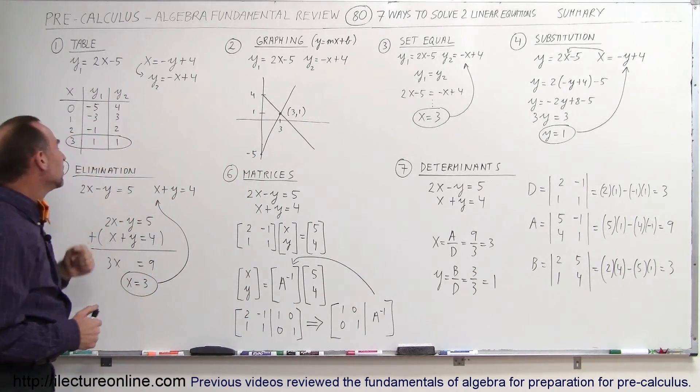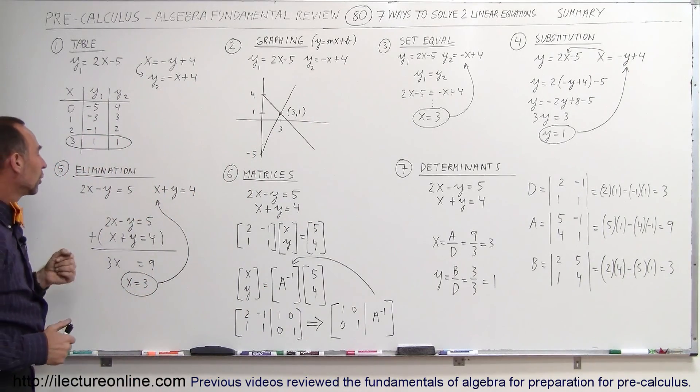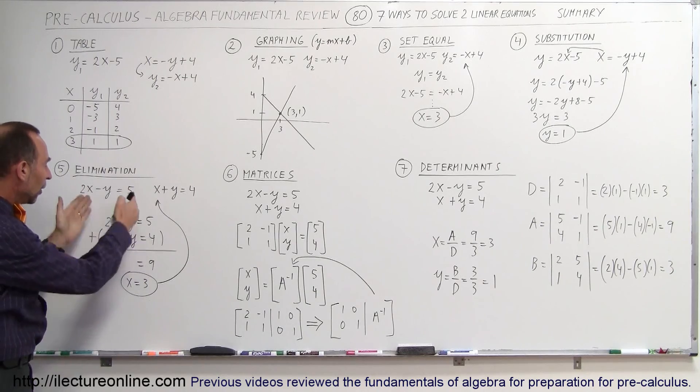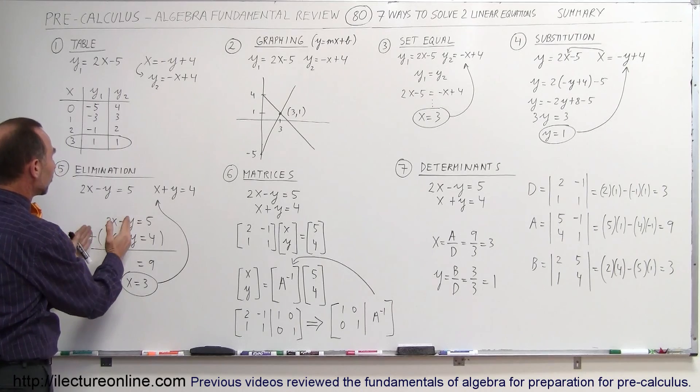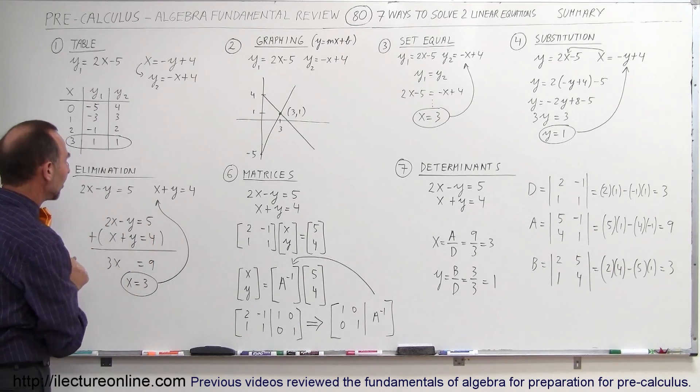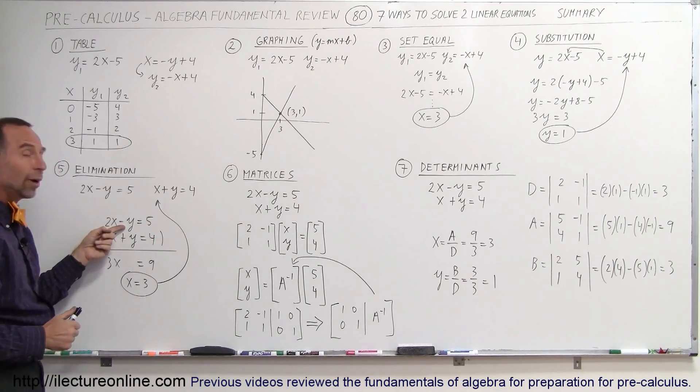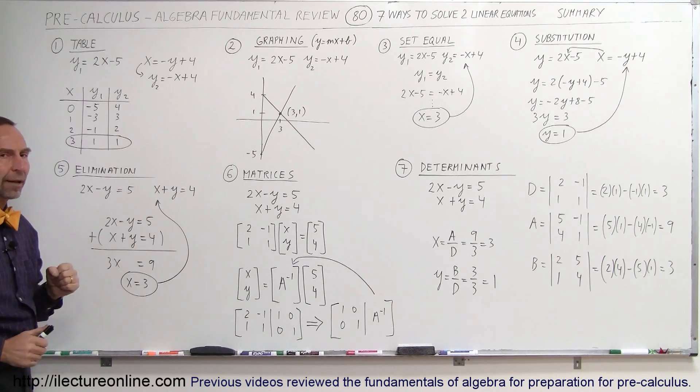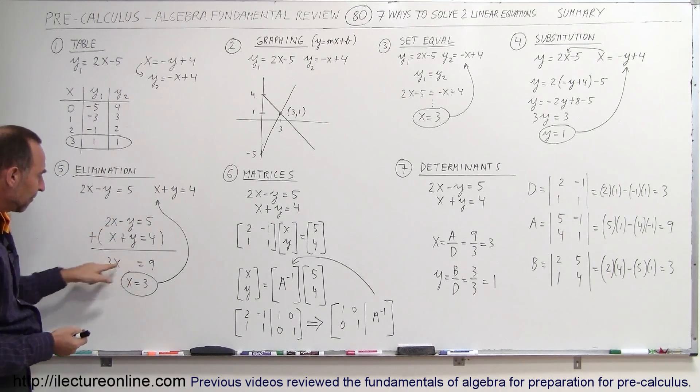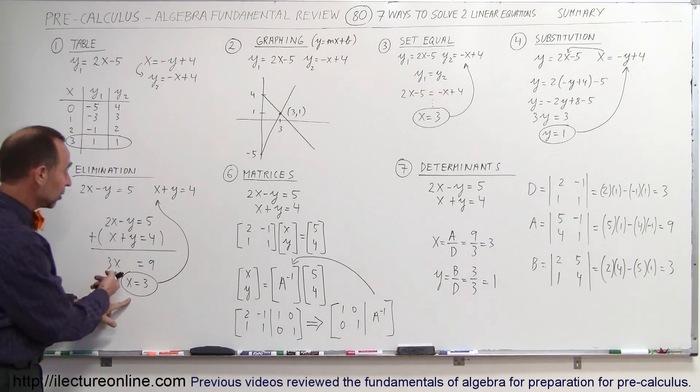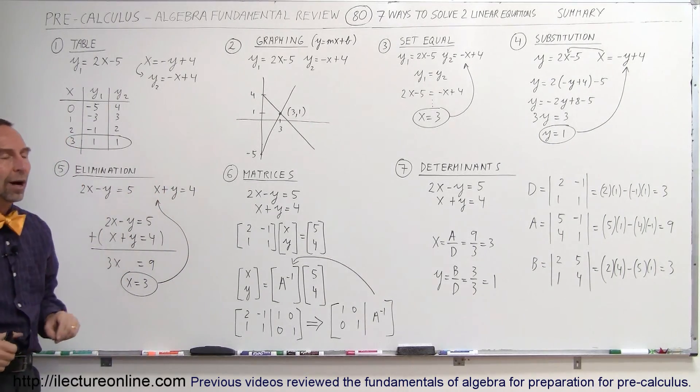The fifth method is called the elimination method. Here's your two equations. You put them one on top of each other, but notice the format. You write them as the x and the y values on one side and the constants on the other side. Notice that you have a minus y in the top equation and a plus y in the bottom equation. When you add the two equations together, the y's drop out. You only have x values, so you solve for x. Then you plug that x back into one of your two equations to solve for y.